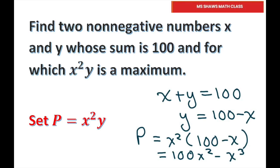Then we're going to take the derivative of P. So basically, we have P equals 100x squared minus x cubed. To take the derivative of P with respect to x, you get 200x minus 3x squared. Now, set the derivative equal to 0.